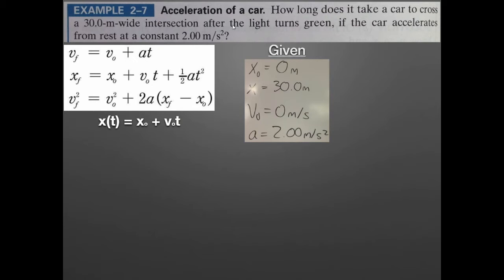Also, a car to cross an intersection after the light turns green, if the car accelerates from rest. When you see the word from rest, that means your initial velocity is 0 meters per second. Then it gives us the acceleration, 2.0 meters per second squared. What are we wanting to find? How long? So we're wanting the time. There's something else we don't know, the final velocity, but I'm going to leave that alone and ask which equation would allow us to find T given this information: X naught, X, V naught, and A. We want T. That would be the second equation.